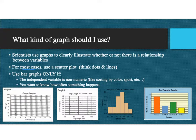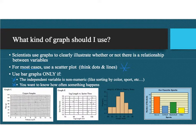For most cases, you're going to use what's called a scatter plot — think lines and dots. Most of the time you're going to be using a line graph or scatter plot. You can use a bar graph, but there are basically only two times you should be using a bar graph: if the independent variable is non-numeric, like you're sorting by color or sport or hair length and you're not using any numbers.